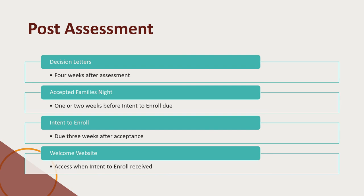If accepted, a student will receive an acceptance package that includes an intent to enroll letter. This letter must be completed and returned to Davidson Academy Online within three weeks in order to hold a space for the upcoming school year. Davidson Academy Online administrators hold accepted families nights via Zoom a week or two before the intent to enroll deadline to introduce the school and answer questions. Once we have received a student's intent to enroll, we will provide access to a welcome website that contains a wealth of information for new families.